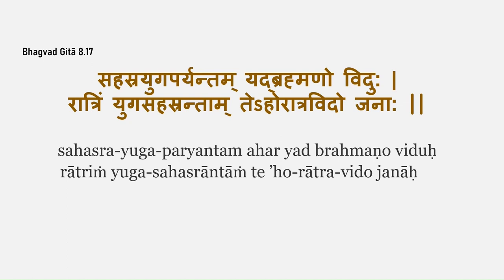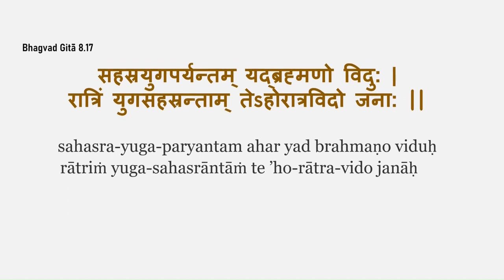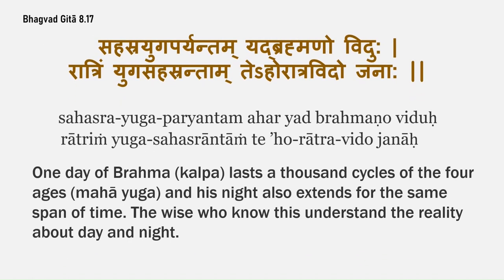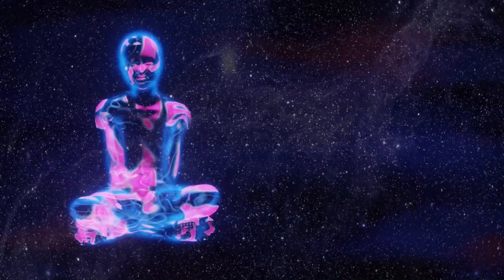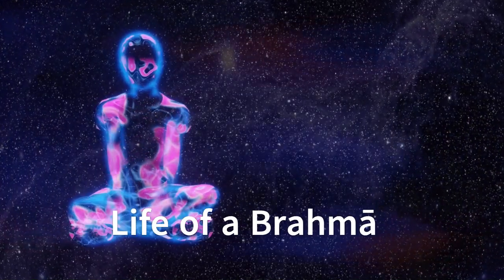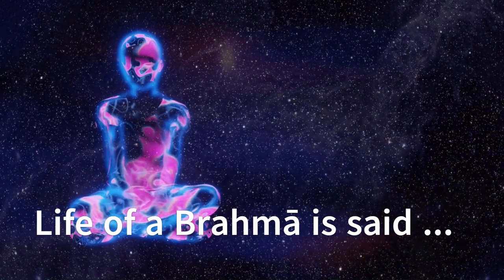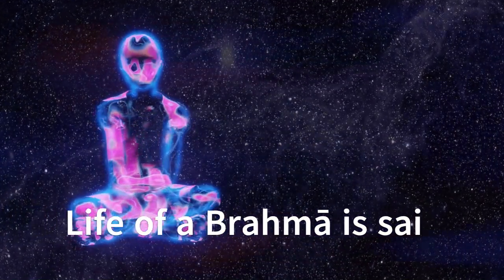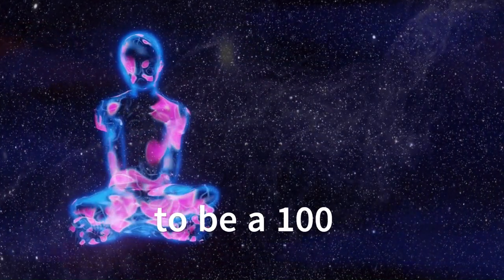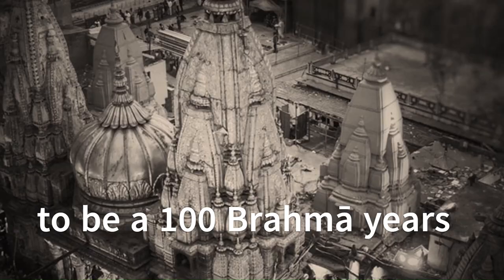Implying, a day of Brahma lasts a thousand cycles of the four ages, and so does his night. This is 4.32 billion solar years. And the life of a Brahma and the universe is 100 Brahma years, which translates to 3.11 into 10 raised to the power 14 solar years.